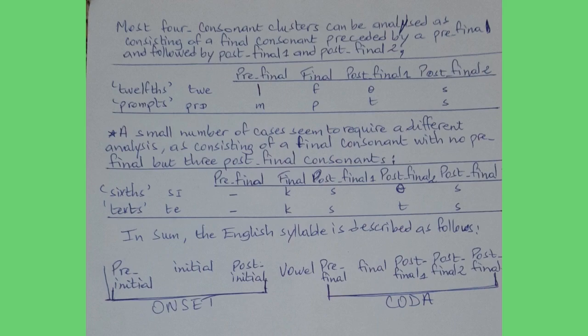In sum, the English syllable is described as follows. In the onset, we have pre-initial, initial, and post-initial — meaning some syllables have all three, others have pre-initial and initial only, and others have initial and post-initial only — plus the vowel sound, plus the coda, which can have a maximum of four consonants: sometimes pre-final plus final plus post-final one, post-final two, and post-final three.